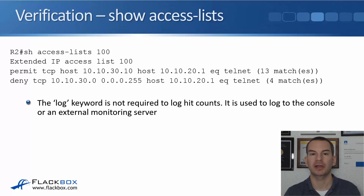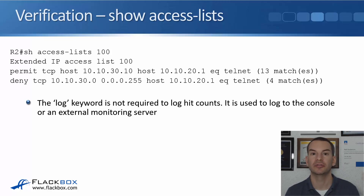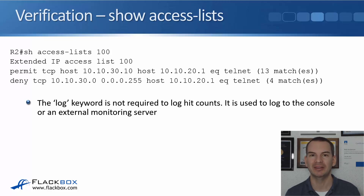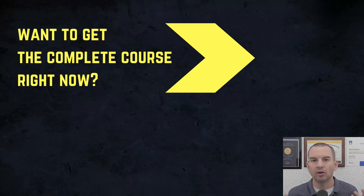Note that we did not specify the log keyword in that example — the log keyword is not required to see those hit counts in the output. The log keyword is used to log to the console or to an external monitoring server. So that was it about how to configure and verify our ACLs, but we've still got more information about ACLs to learn, so I'll see you in the next lecture. If you'd like to get the complete course ad-free, you can enroll in my CCNA Gold Bootcamp by clicking the link above my head or in the description. It also includes full study notes, quizzes, and 150 pages of additional troubleshooting labs.